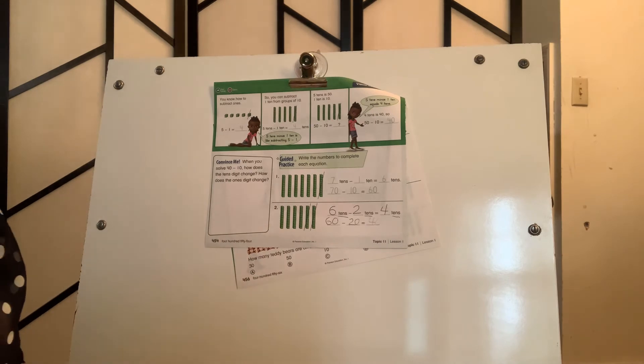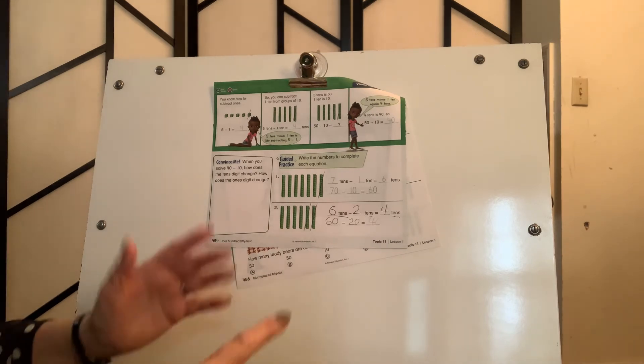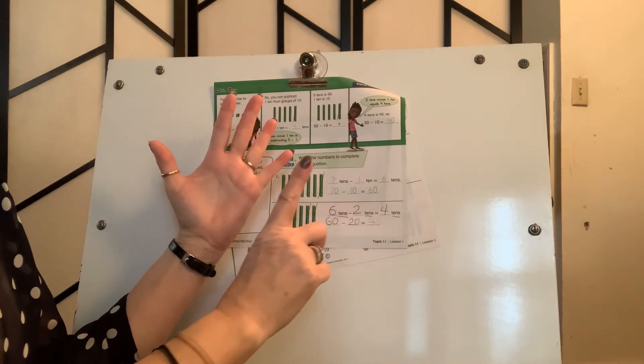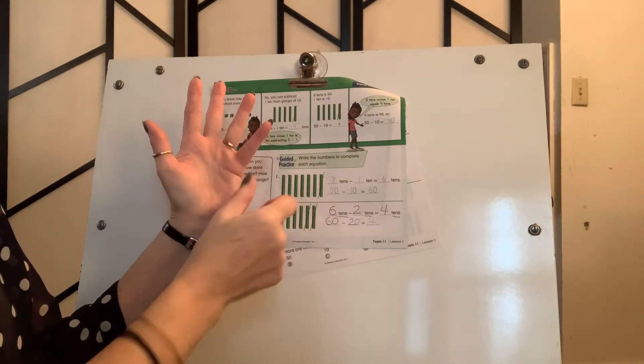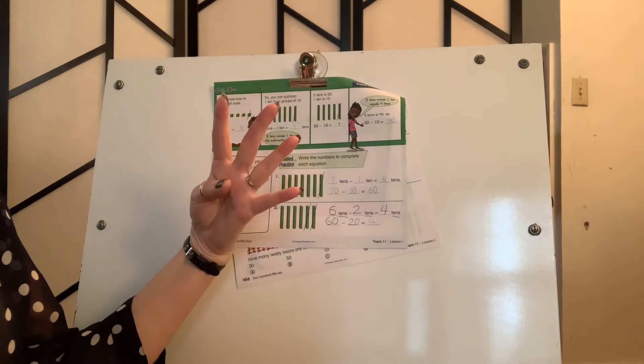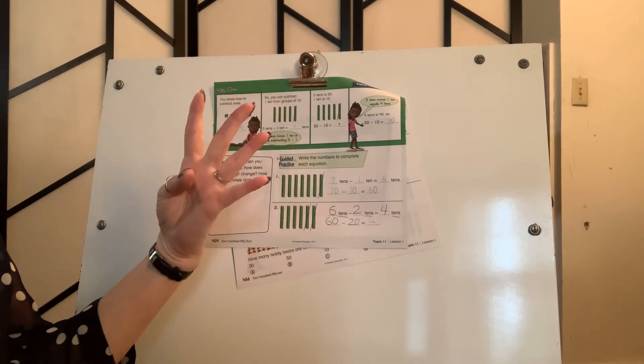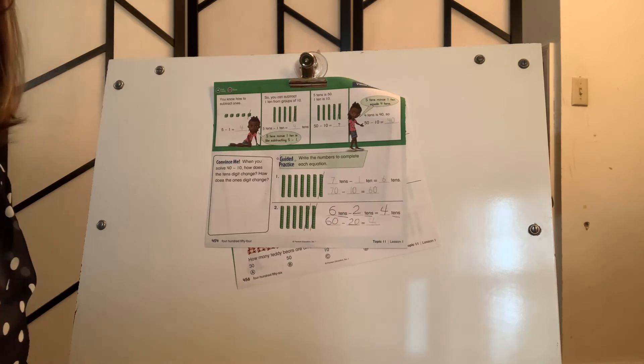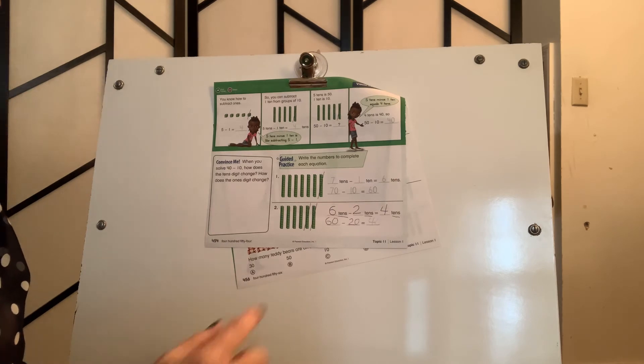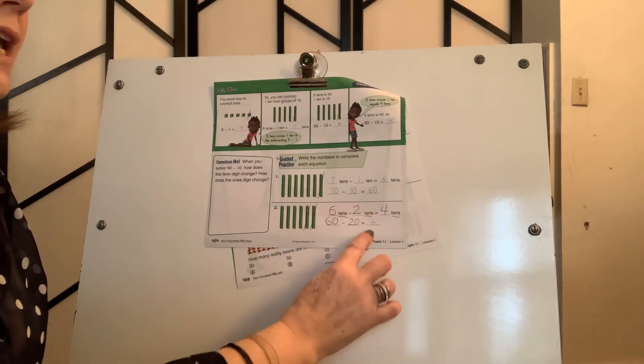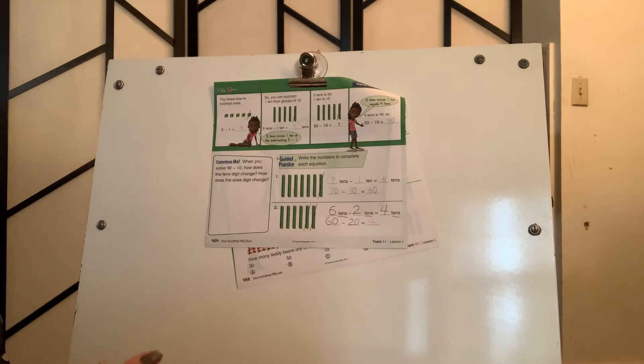Now, let's do 6 minus 2 equals 4. I'm going to put up 6 fingers. 1, 2, 3, 4, 5, and 6. And I'm going to take away 2. And how many fingers do I have left? 4. So, 6 minus 2 equals 4. We know that to be true. But now we're going to turn them into 10s. 60 take away 20 equals 40. And I see Luke and Maddox and Wes and Cason, your table all got that right.